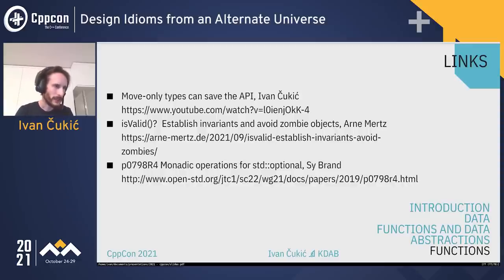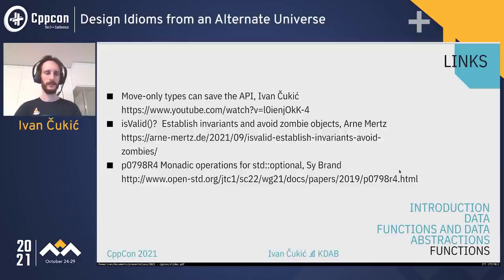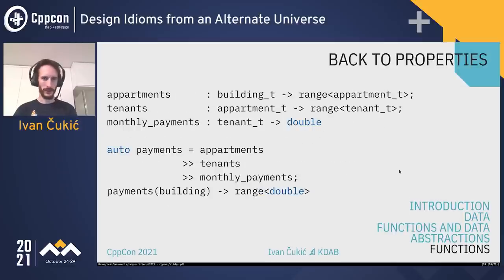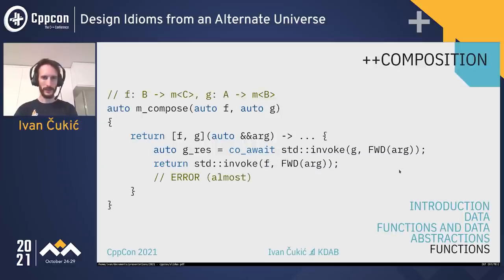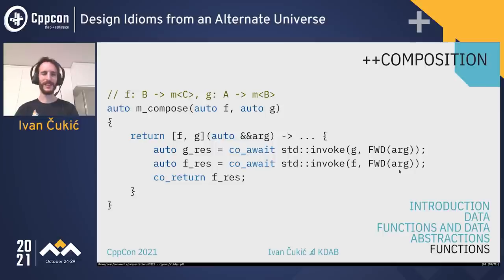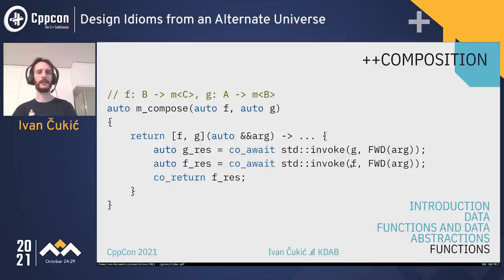Q: In one of your co_await slides near the end, it looked like you didn't use `res`. A: Yes, that needs to be `res`. We are extracting the result from the previous co_await and want to pass the result of g to function f.